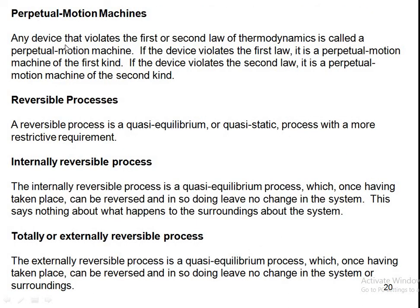Any device that violates the first or second law of thermodynamics is called a perpetual motion machine. If it violates the first law it is a perpetual motion machine of the first kind (PMM1), and if it violates the second law it is a perpetual motion machine of the second kind (PMM2).